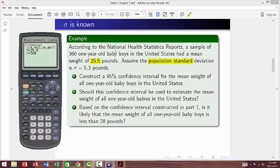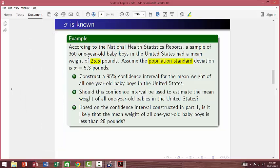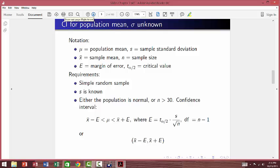So again, when sigma is known, when you have population standard deviation, then we use z interval. Let's go ahead and take a look at the next problem. What if sigma is not known? This is a situation that is more realistic.